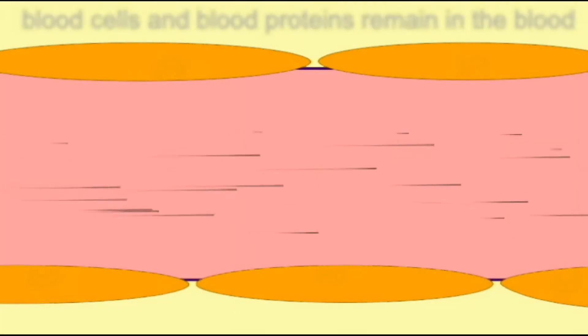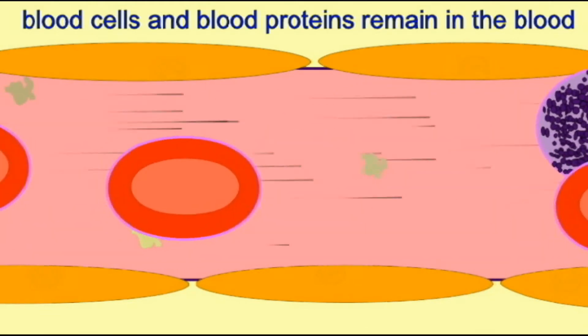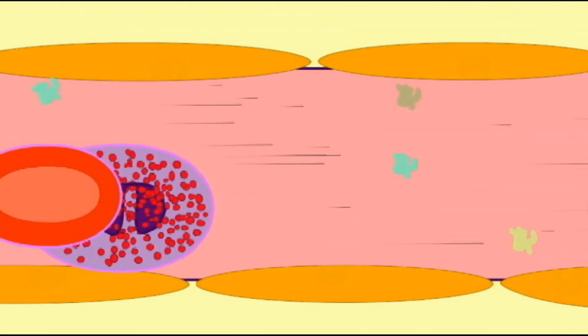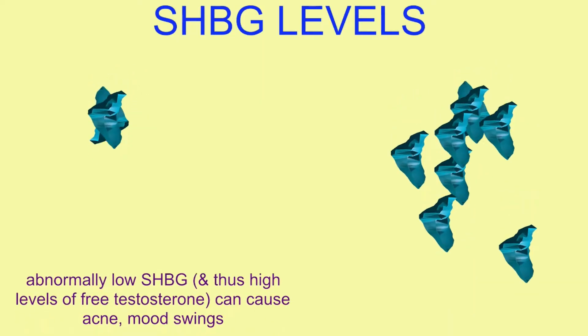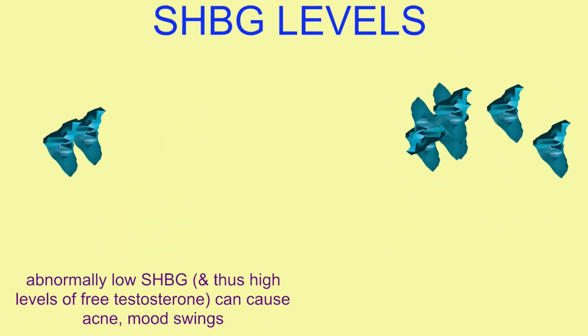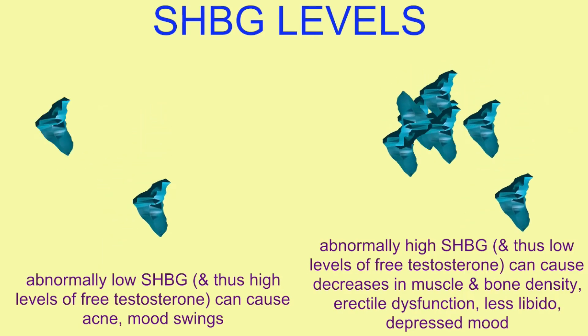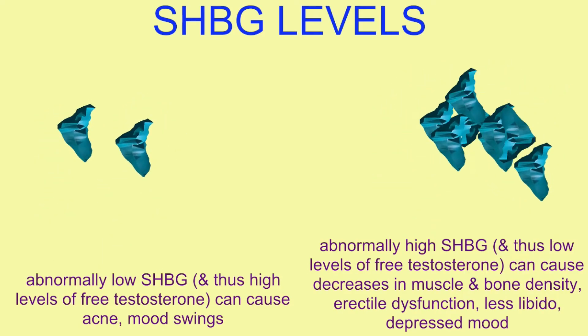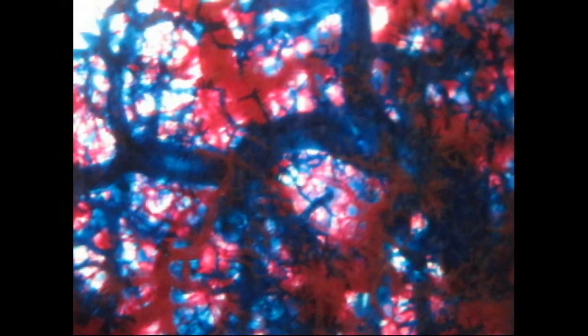If the SHBG level is not within normal range, then the total testosterone level is a useful measure, but not enough, because one doesn't then actually accurately know the amount of free testosterone. Thus, it is often important to measure the levels of sex hormone binding globulin in blood plasma, since abnormally low SHBG levels and thus high levels of free testosterone can result in effects varying from acne to mood swings, while abnormally high levels of SHBG and thus low levels of free testosterone may cause decreases in bone and muscle density, erectile dysfunction, lower libido, and depressed mood.